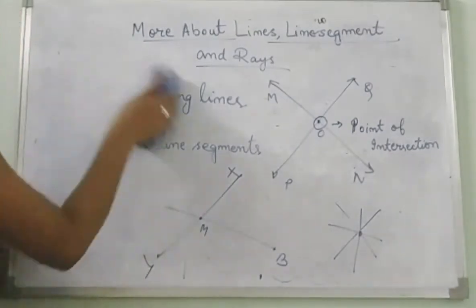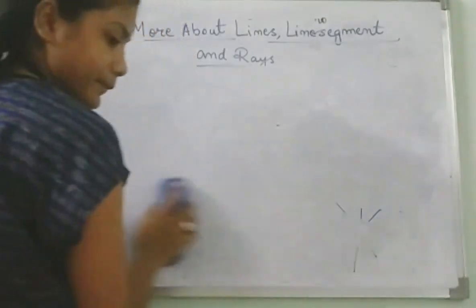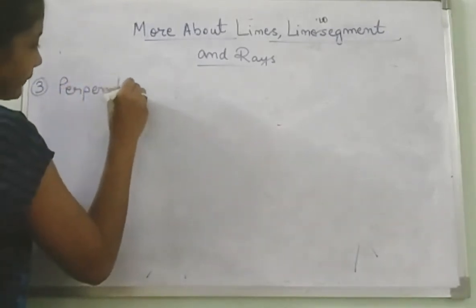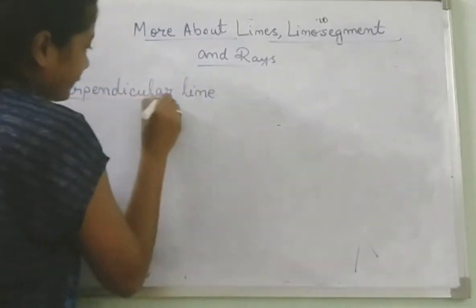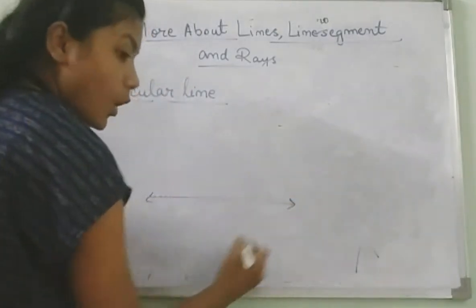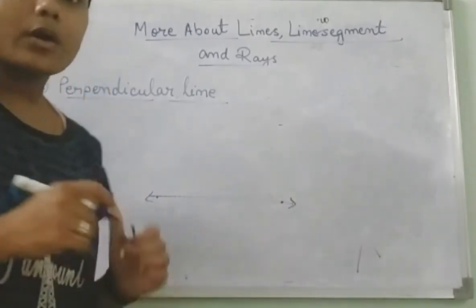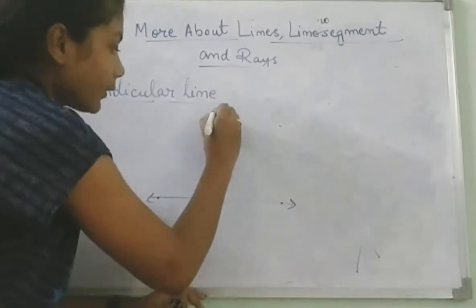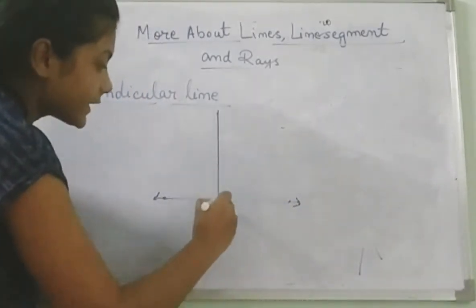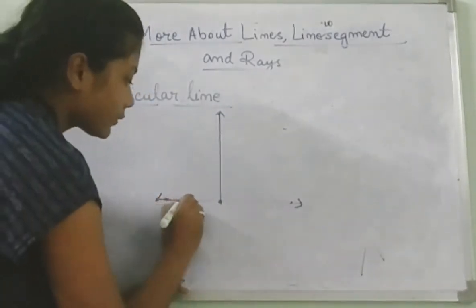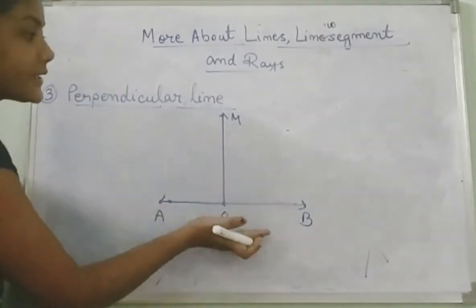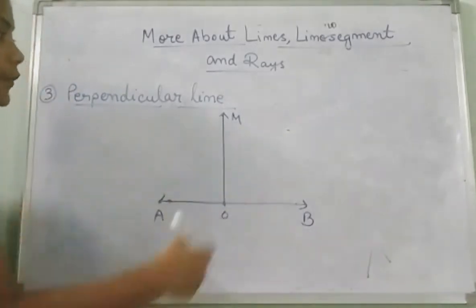The next one is perpendicular lines. In a perpendicular line, when a vertical line, ray, or line segment meets a horizontal line, ray, or line segment, it forms a perpendicular line. This horizontal line meets the vertical line, and this perpendicular line intersects the vertical line at point O, forming a perpendicular line.